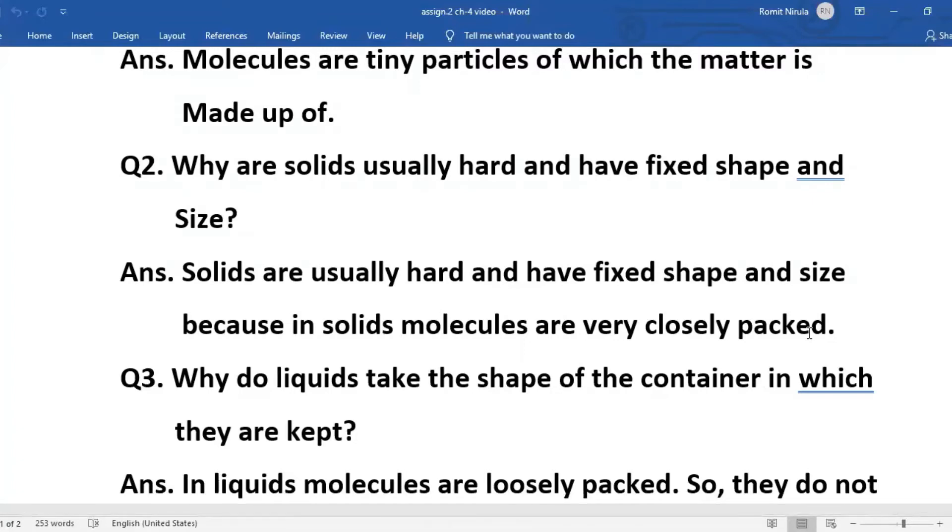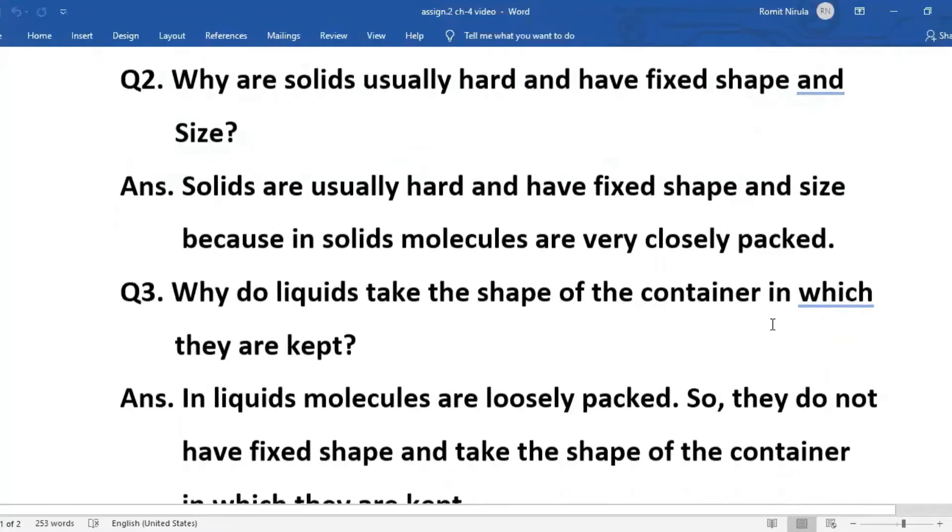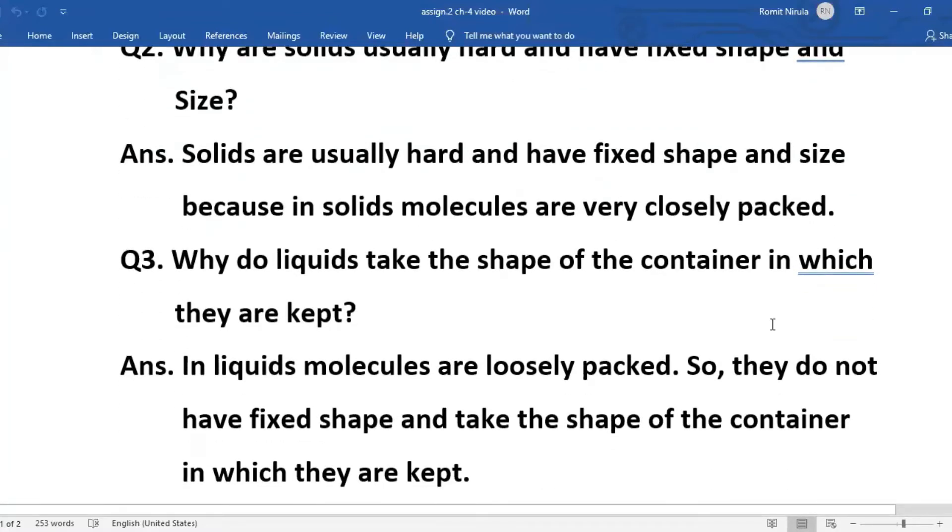Number three: Why do liquids take the shape of the container in which they are kept? Answer: In liquids, molecules are loosely packed. That means they have space in between them so they can move. So they do not have fixed shape and take the shape of the container in which they are kept.